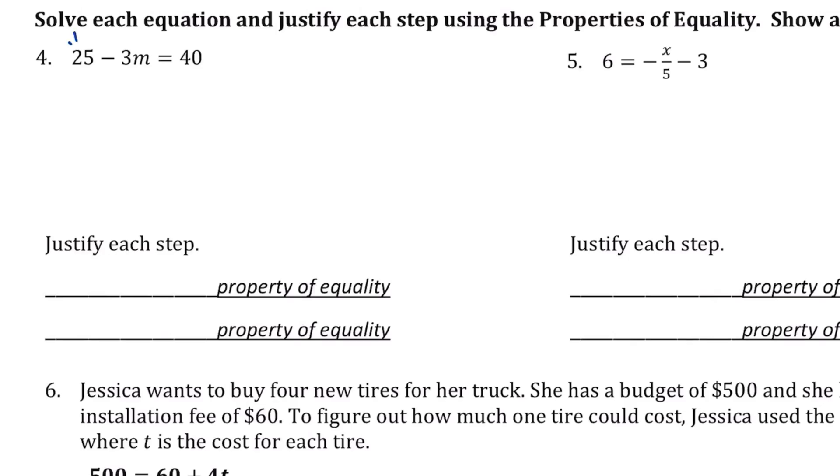I need to get rid of this guy first, so I'm going to subtract 25 from both sides. If I do that, I get -3m = 15. Then I'm going to divide by -3. And when I do that, I get m = -5.